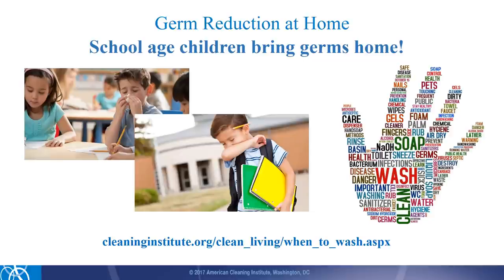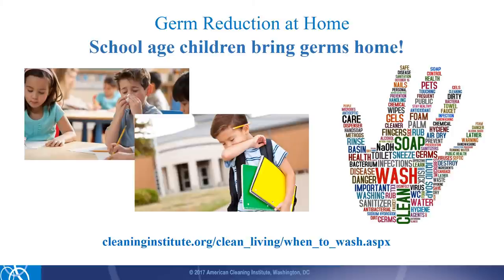For example, if you have children in school, when they come home every day, they're bringing germs with them — whether it's on their backpacks, gym clothes, school books, or writing tools. One step you can take to reduce germs is to make sure that your child gets into the habit of washing their hands properly in school as well as at home. ACI has developed a resource that provides a guide as to when and how to properly wash hands, found on our website under the Clean Living section. Another step is to regularly clean out the backpack — check the label to see if it can be tossed in the washing machine, or wipe it down with disinfectant to reduce germs.